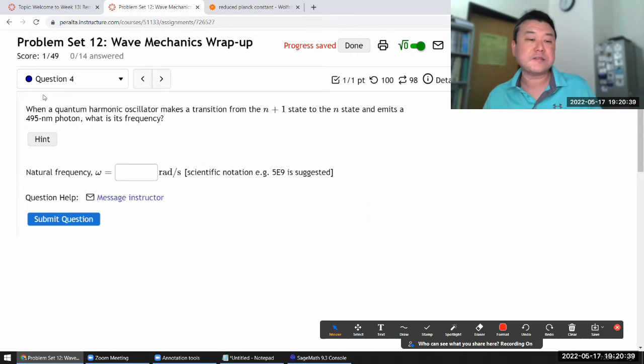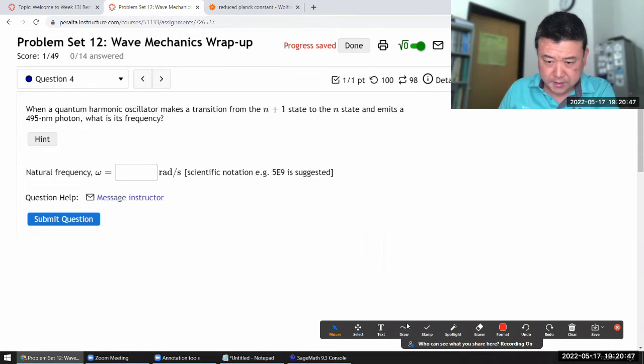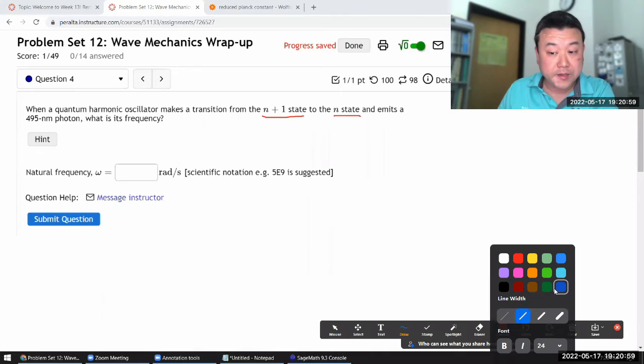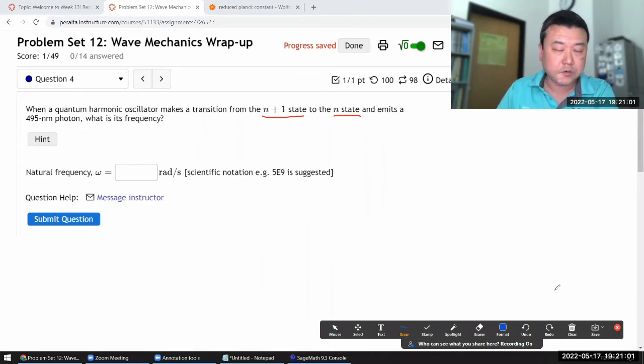So this question says when a quantum simple harmonic oscillator makes a transition from this state to this state and emits a photon, what is its frequency?